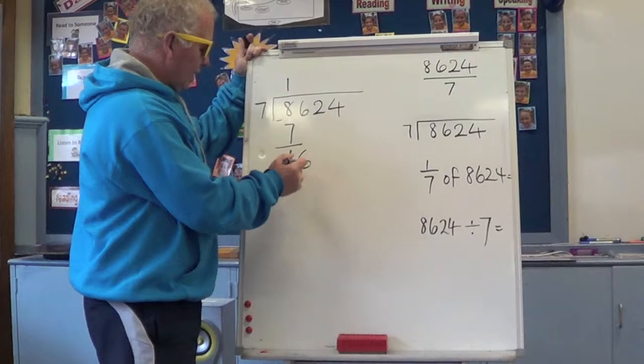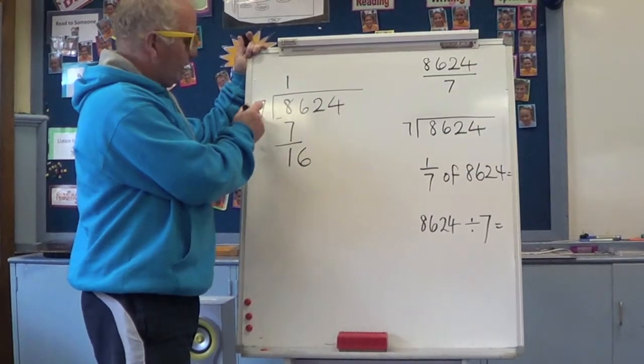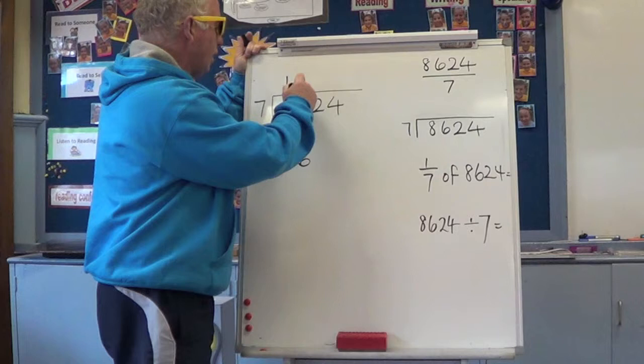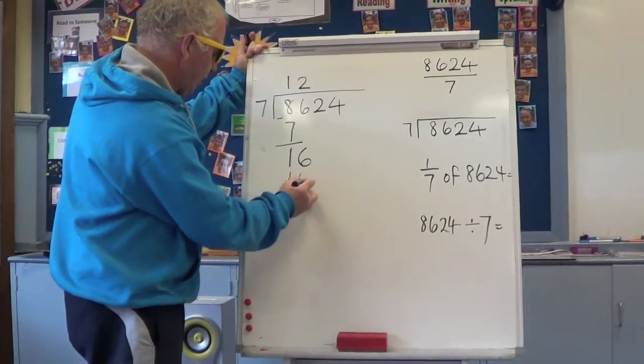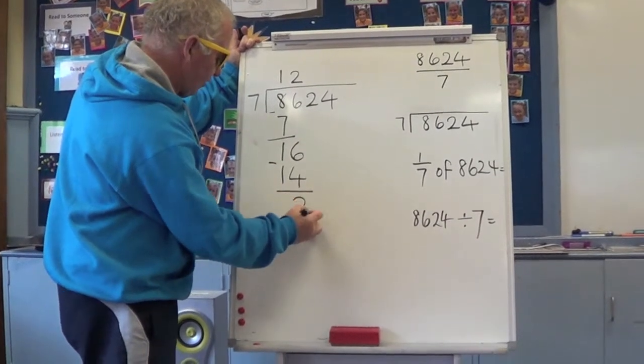Bring down the 600. 1,600 shared into 7 groups goes to 2. They get 200 each. 200 multiplied by 7 is 1,400. We take that away from there and we get 200 left over.